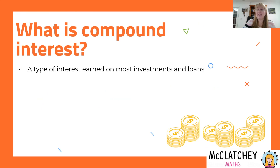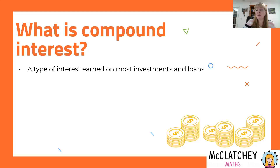Compound interest is defined as a type of interest that you would earn, and it's earned on most investments and loans like mortgages, personal loans, and most things like bank interest. So lots of loans and investments apply compound interest. In fact, it's very common in real life.